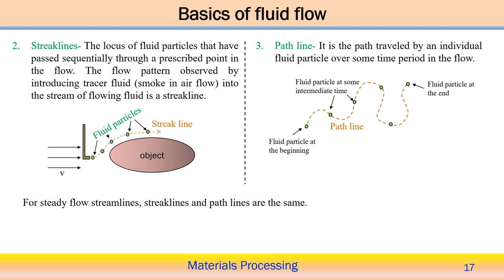We can also represent streak lines. A streak line is the locus of the fluid particles that have passed sequentially through a prescribed point. The flow pattern is observed by introducing a tracer fluid, for example smoke in airflow. We can see how particles of smoke follow a particular sequential path — that path is represented as a streak line, passing over an object within the flowing fluid.